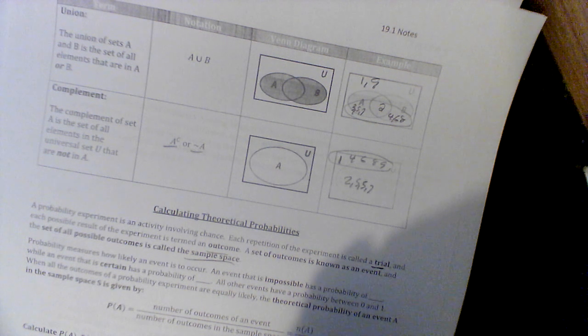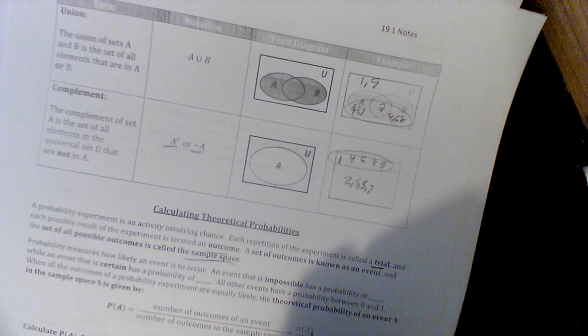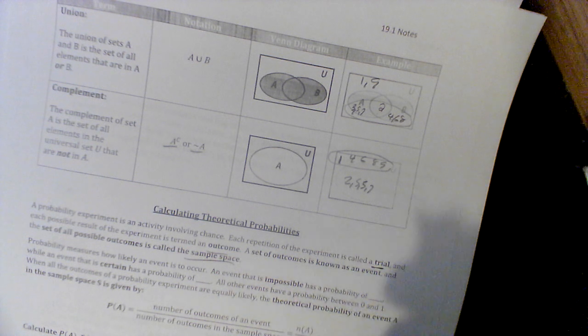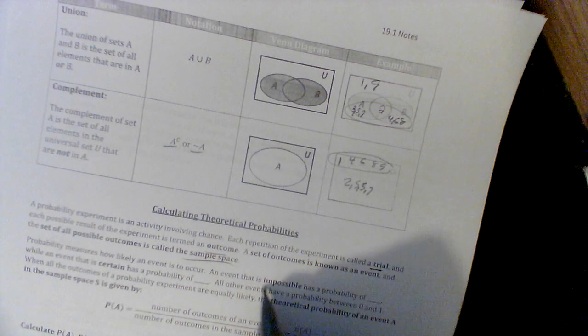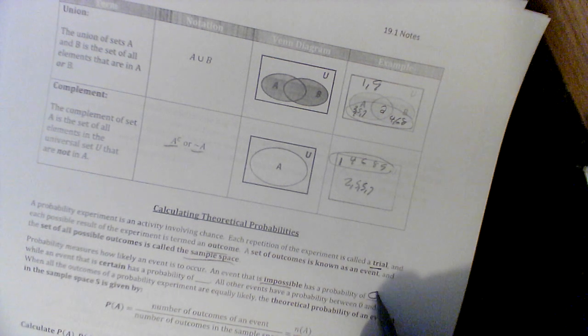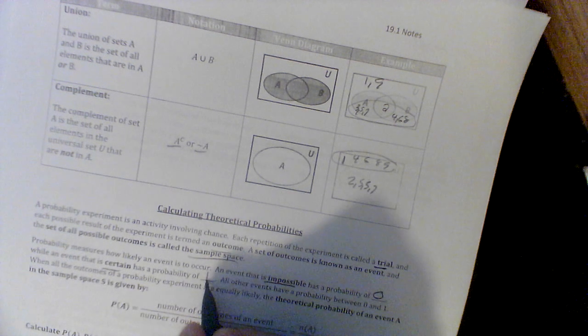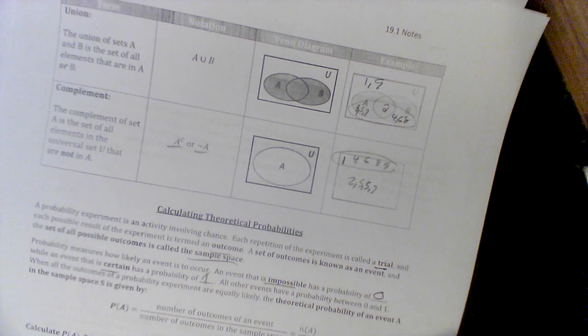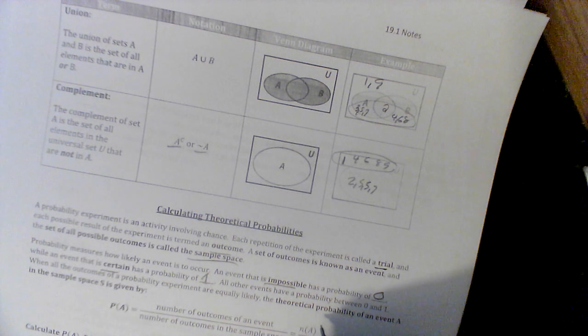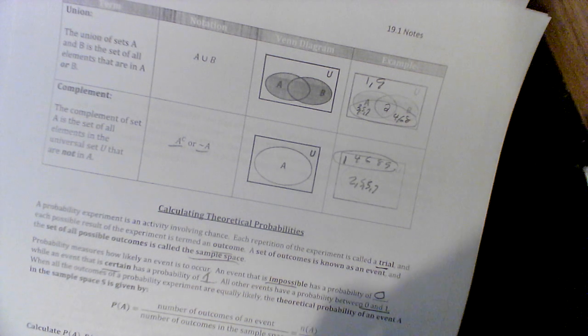Probability measures how likely an event is to occur. If an event is impossible, the probability is 0. If it's certain, the probability is 1, which is 100%.